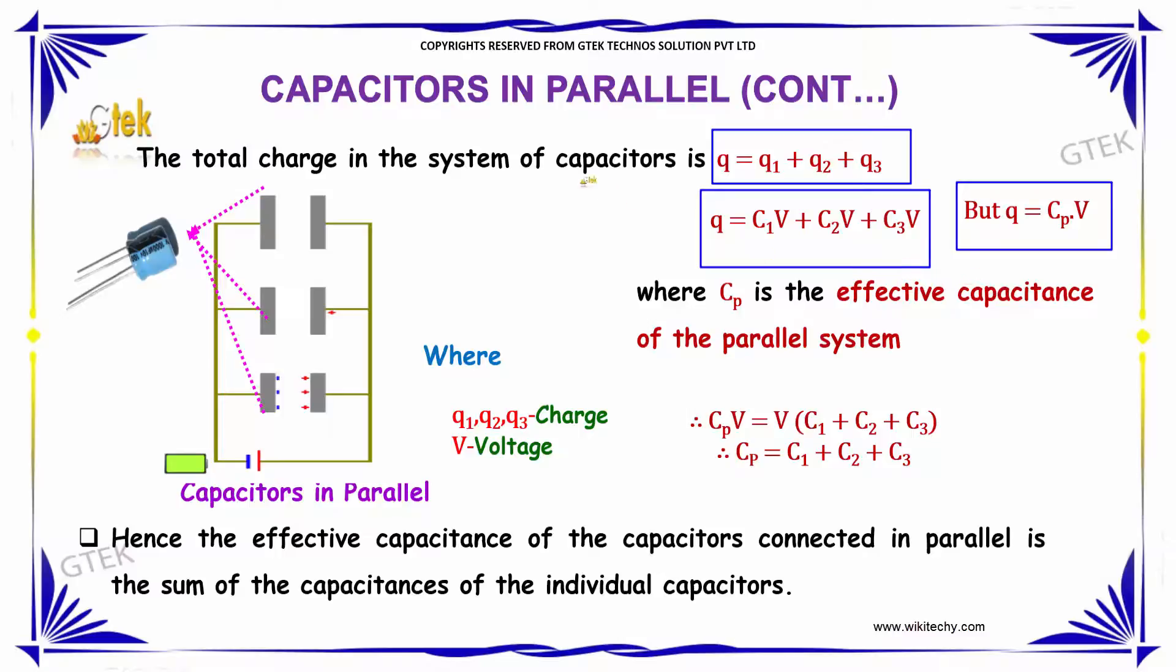For a parallel combination, Q = CpV, where Cp is the effective capacitance of the parallel system. Therefore, CpV equals V(C1 + C2 + C3).